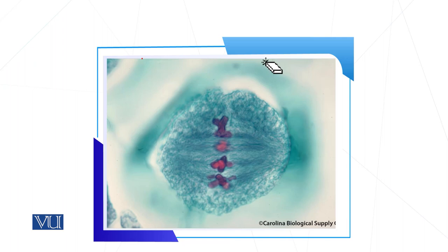Can you identify this next stage? The chromosomes are aligned in the center, so it should be a metaphase. To determine whether it is metaphase 1 or metaphase 2 — in meiosis 2, the sister chromatids are separated. Since there is no movement to opposite poles in this image, it is metaphase 2.